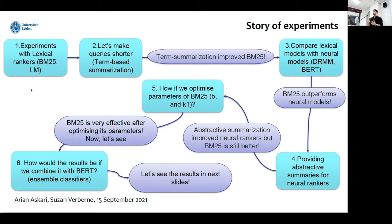After that, we thought about how a neural retrieval model could work. We tried DRMM, which stands for Deep Relevant Matching Model, and BERT-kind models. We saw BM25 outperforms neural models. Then we thought about providing abstractive summaries for neural rankers, and we saw abstractive summarization improved neural rankers, but BM25 is still better.